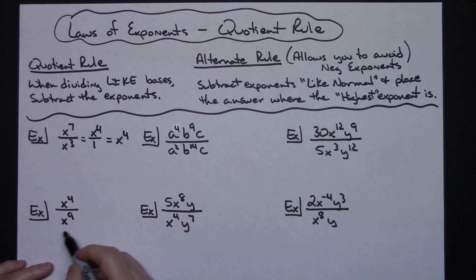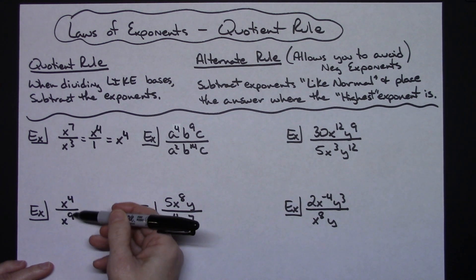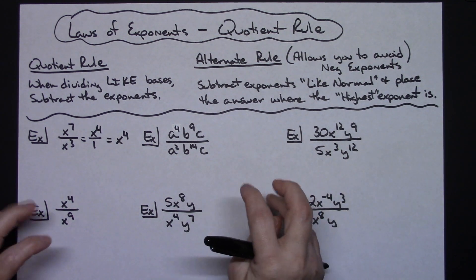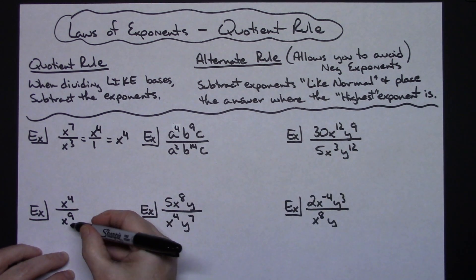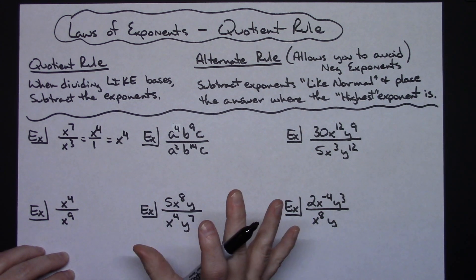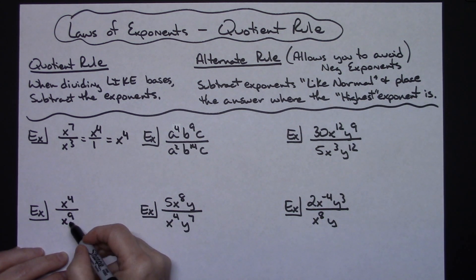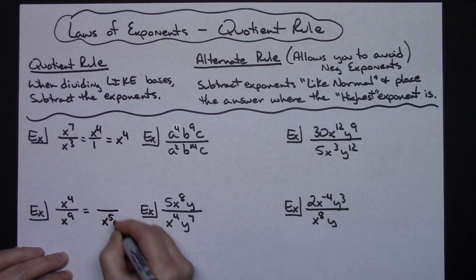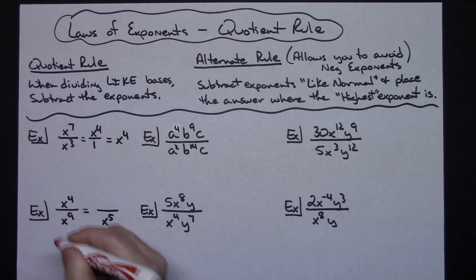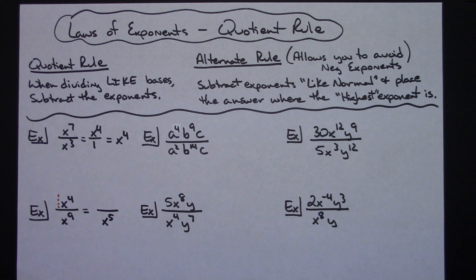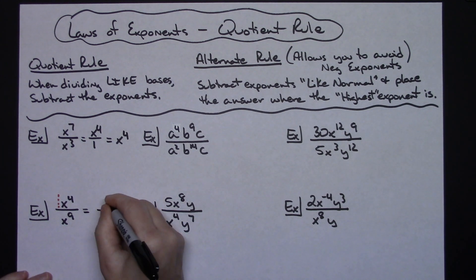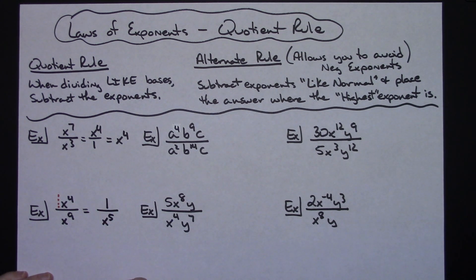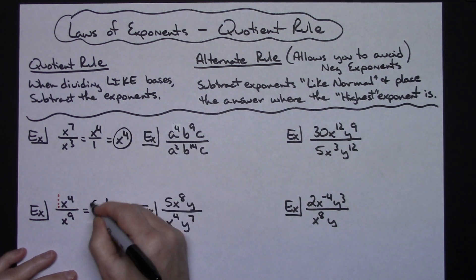Now let's apply the alternate rule to x to the fourth over x to the ninth. I subtract big minus small: nine minus four gives me five, so I have x to the fifth. Since x to the ninth has the highest exponent and it's in the denominator, x to the fifth goes in the denominator. There's an imaginary one coefficient in the numerator, so the answer is 1 over x to the fifth.